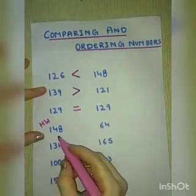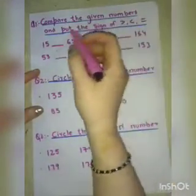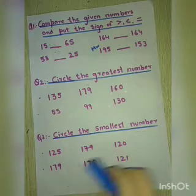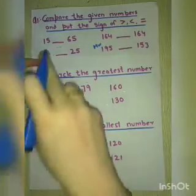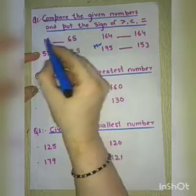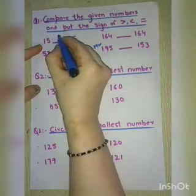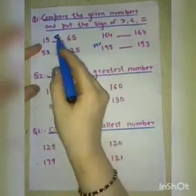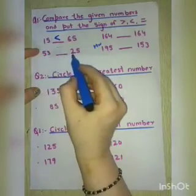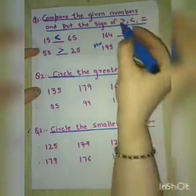The next 4 questions are for homework. Now the exercise: compare given numbers and put the sign of less than, greater than, or equal to. For 15 and 65 — at 10's place 1 and 6 — 15 is less than 65. For 53 and 25 — at 10's place 5 is greater than 2, so 53 is greater than 25. For 164 and 164 — both are same, so we put the equal to sign.